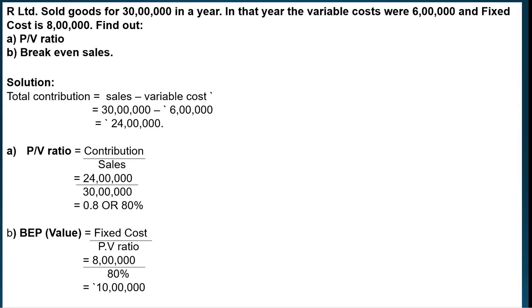The next problem: R-Limited sold goods for Rs. 30,00,000 in a year. Variable costs were Rs. 6,00,000 and fixed costs were Rs. 8,00,000. We need to find the PV Ratio and break-even sales. First, Contribution = Sales minus Variable Cost = 30,00,000 minus 6,00,000 = Rs. 24,00,000. Then, PV Ratio = 24,00,000 divided by 30,00,000 = 0.8 or 80%.